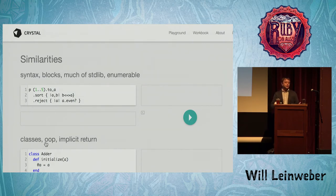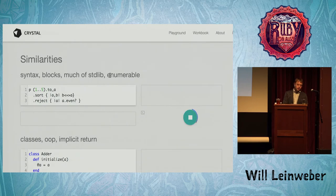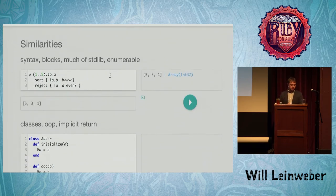So, similarities between Ruby and Crystal. You have, of course, ranges — same. Using 'p' to do puts within spec. Turning it to an array. Being able to chain methods, blocks, lambdas, closures, and so on and so forth. This code would work the exact same way in Crystal as it does in Ruby.